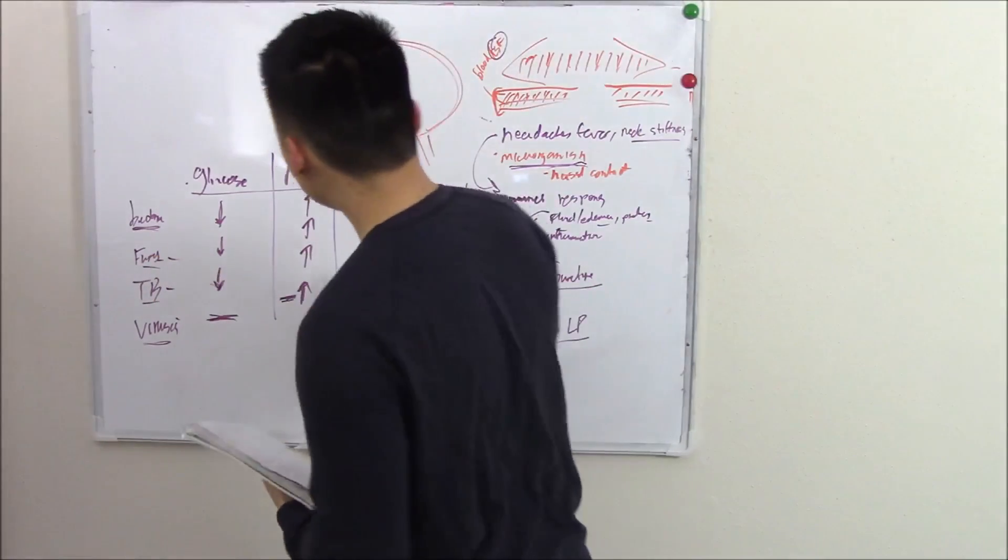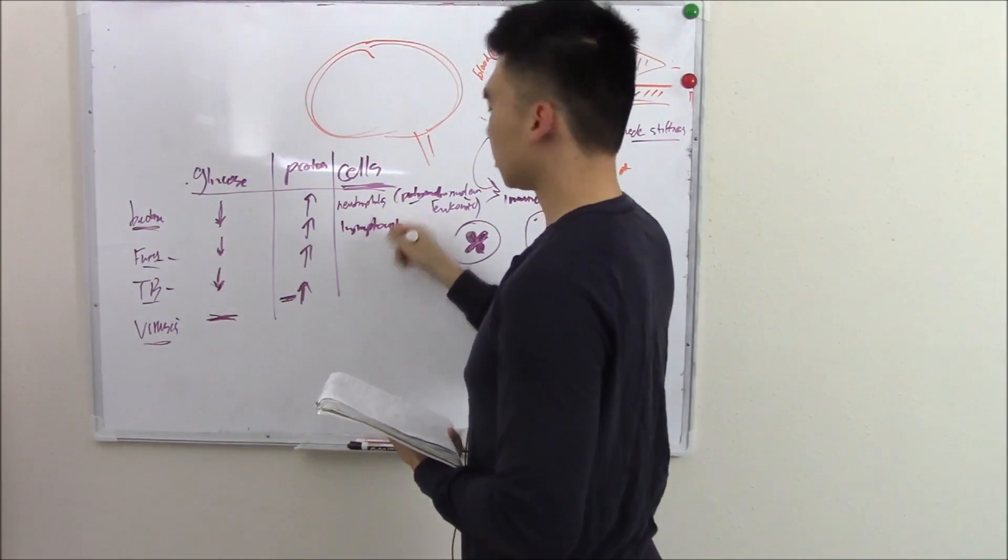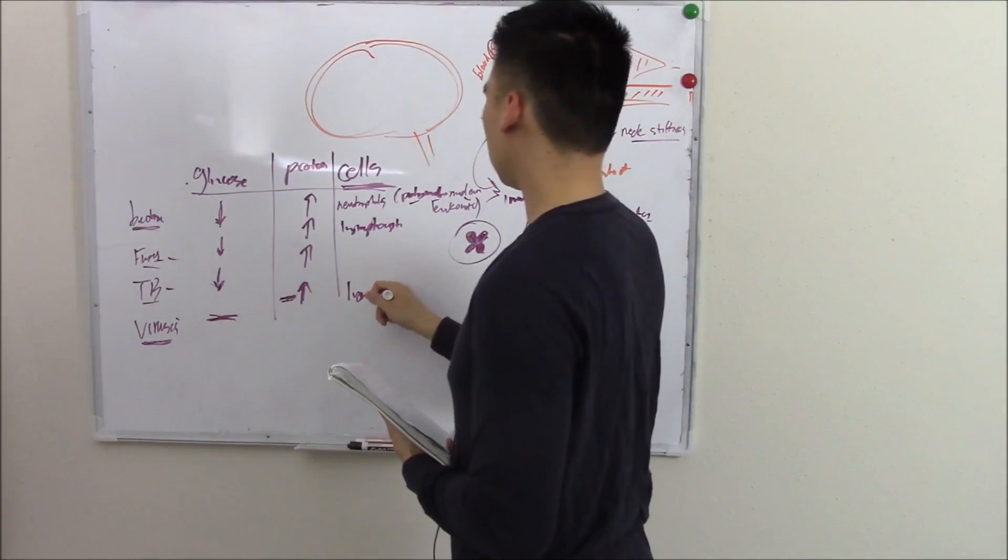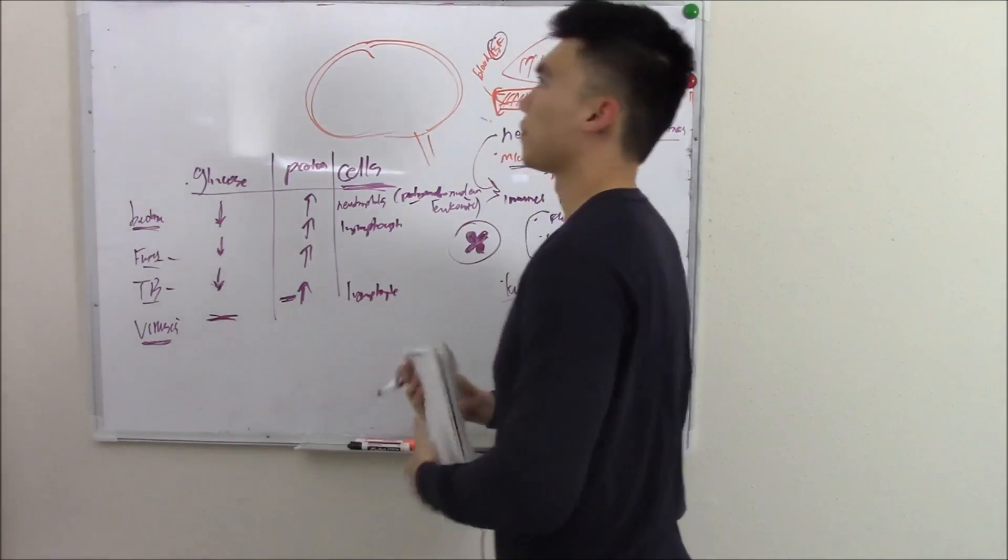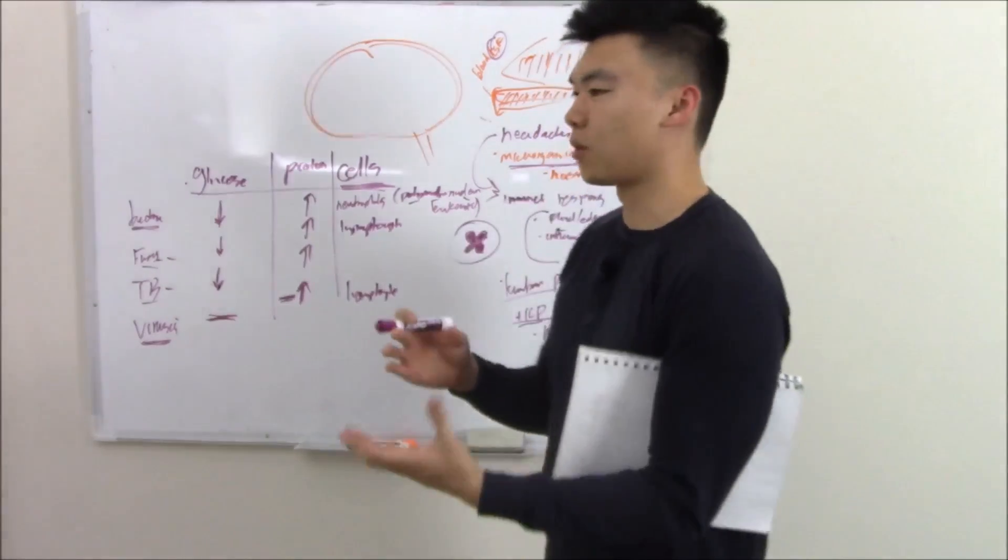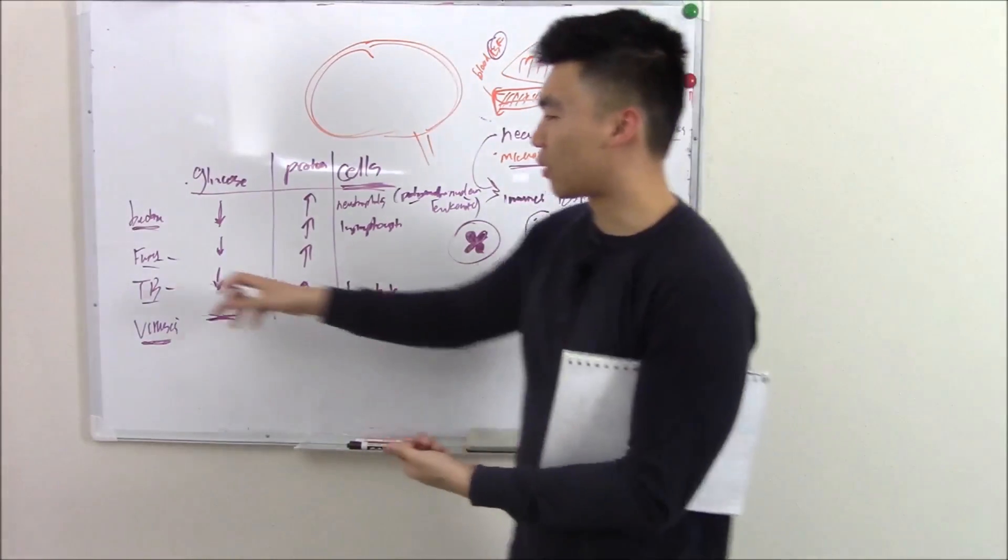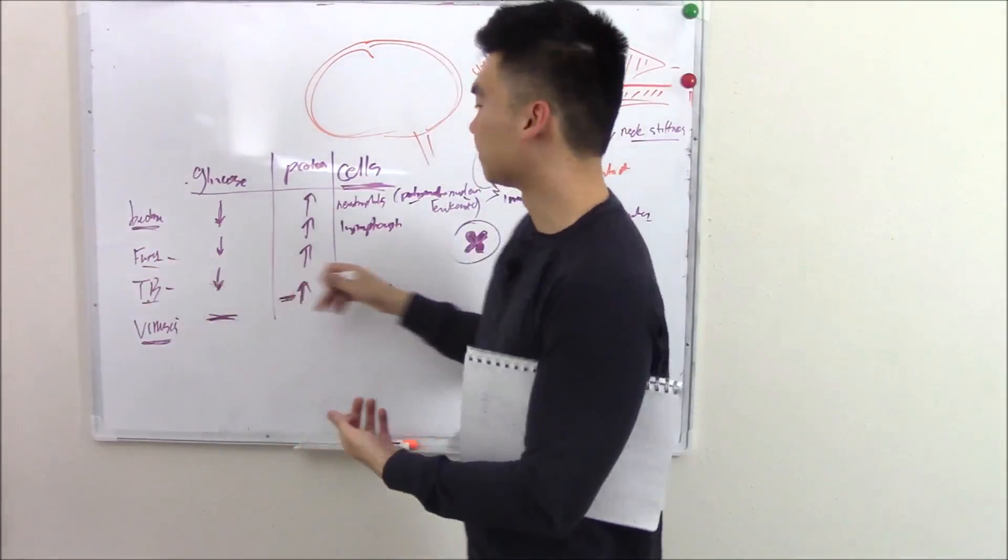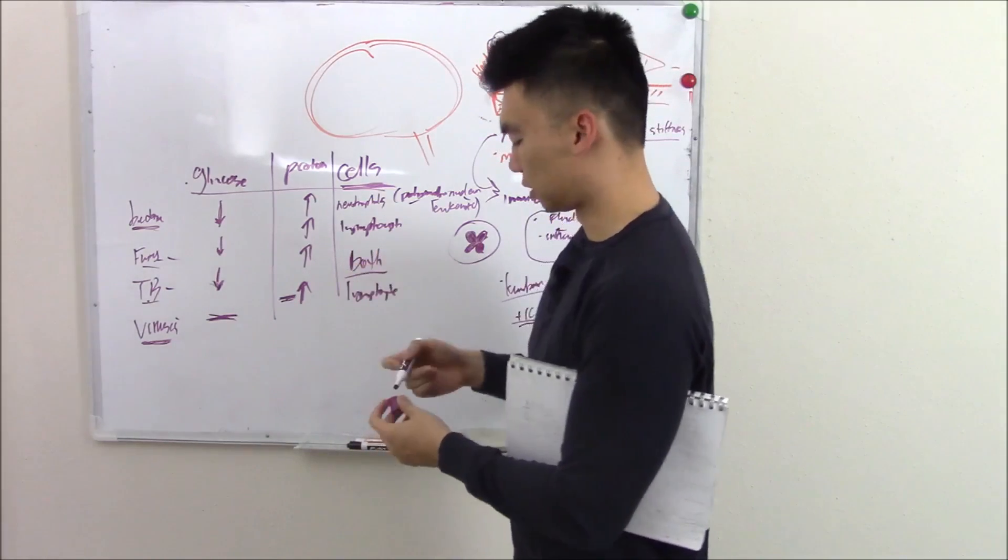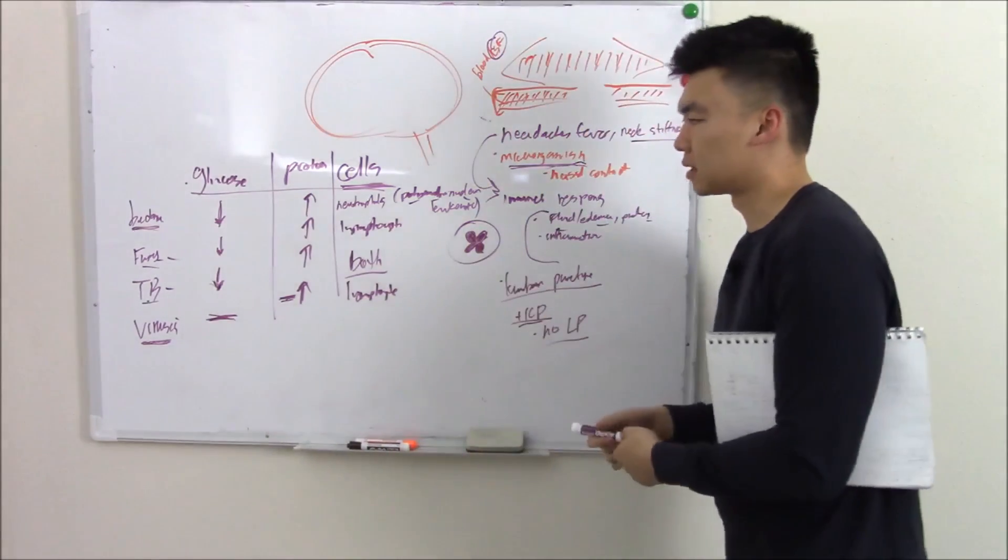Now funguses, our main player is going to be our lymphocytes. Same with viruses, lymphocytes. TB is a bacteria, but it's a very unique bacteria. Microbacterium is just kind of funky. That's why we're kind of listed outside of the bacterial region. And because it's so funky, you see both cells, lymphocytes and neutrophils. Hope that clears things up.